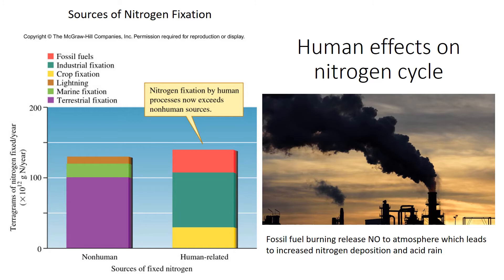The biggest form of nitrogen fixation from humans comes through our manufacturing of fertilizer through the Haber-Bosch process, shown here in green as industrial fixation. That's the main source of nitrogen fixation that humans provide. But there is also a substantial amount of additional fixation through our planting of nitrogen-fixing crops. Things like soybeans — we plant a lot of nitrogen-fixing plants, much more than you would find in natural systems.